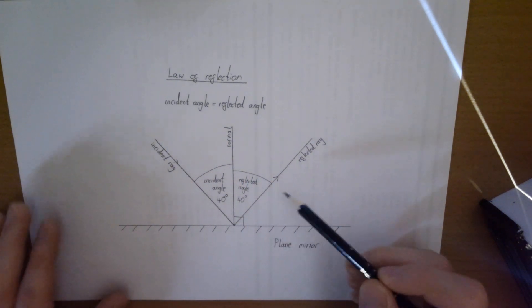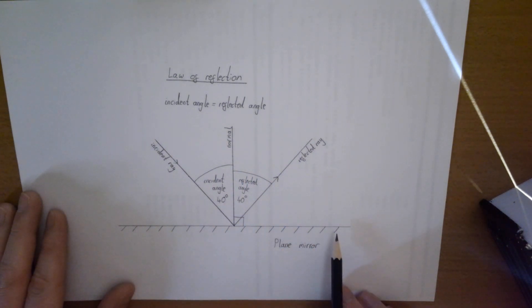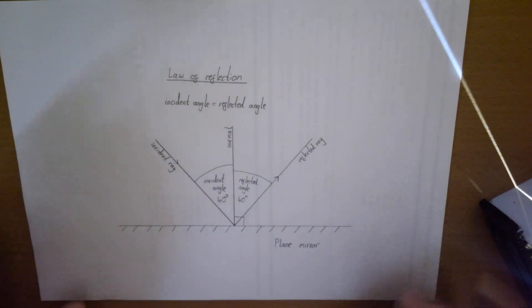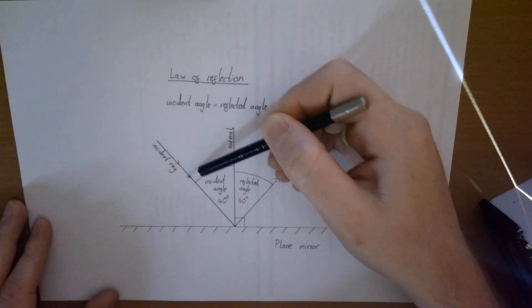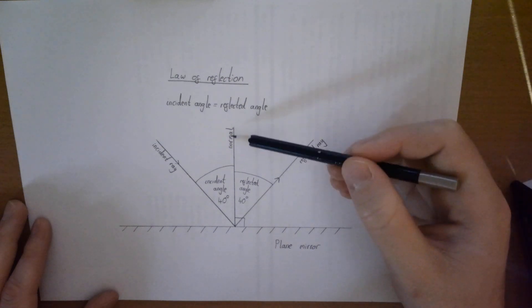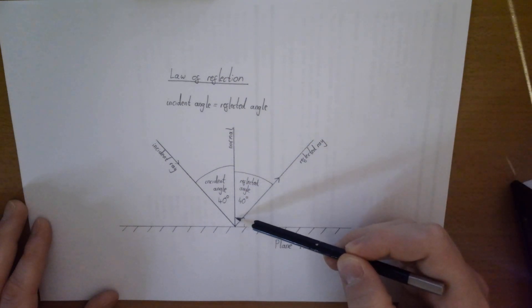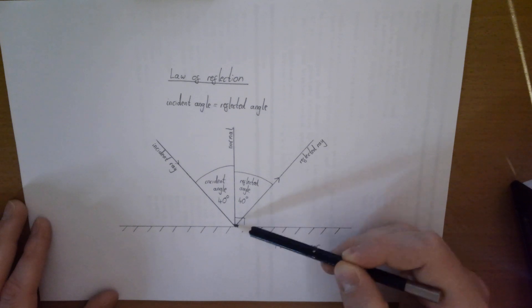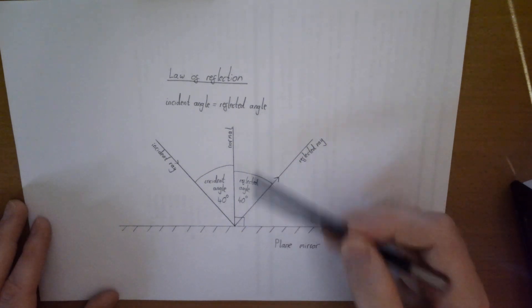What that means is, in this situation down here where you've got a mirror - in this case a plain flat mirror - you've got an incident ray coming in and that reflects off the mirror. This line here is called the normal, and the normal is at 90 degrees to the surface of the mirror.